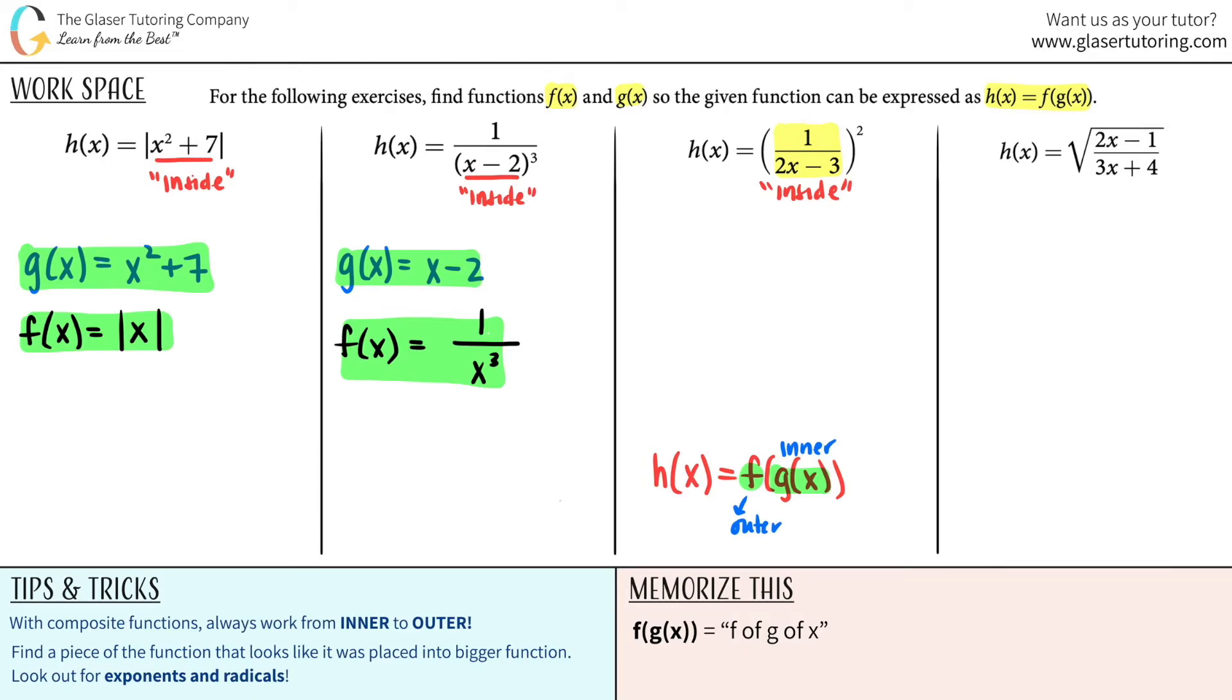You found the inner function. G of x equals 1 over 2x minus 3. So now to find the outer function, you just write whatever was there. And now get rid of everything that you said was the inner function. So bye bye. And you replace it with just a x. And looky there. You just got to make it look pretty. This is just x squared now. You don't need parentheses for that anymore because it's just literally a single x that's being squared. And that's it.